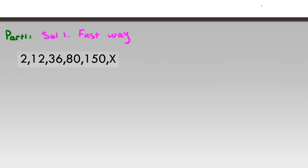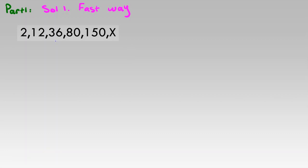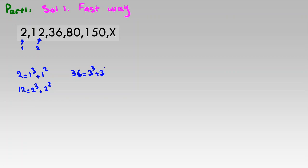For the first element, I want to see what it's related to. You can see 2 is 1 cubed plus 1 squared. The next one, 12, is 2 cubed plus 2 squared. Then 36 is 3 cubed plus 3 squared. You can check 80 and 150 similarly — 80 is 4 cubed plus 4 squared, and 150 is 5 cubed plus 5 squared. So x is 6 cubed plus 6 squared.